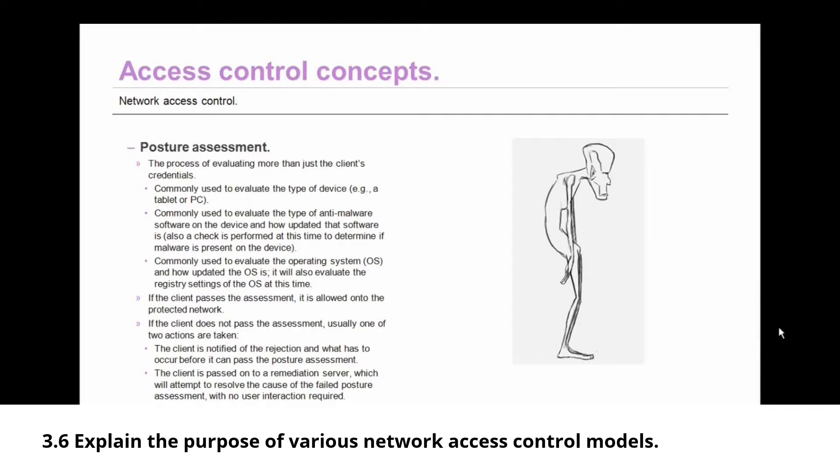If the client passes the assessment, it is allowed onto the protected network. If the client does not pass the assessment, usually one of two actions are taken. The first action could be that the client is notified of the rejection, and what has to occur before it can pass the posture assessment. Does it need an operating system update? Does it need anti-malware installed?